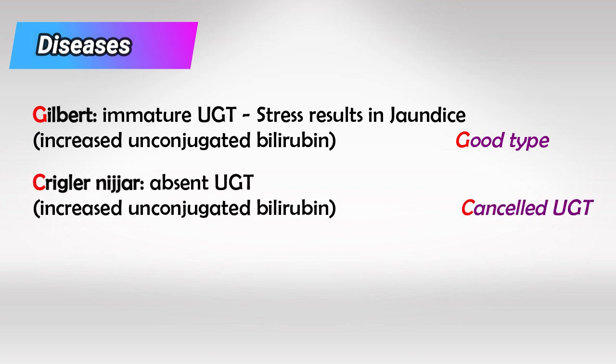Crigler-Najjar syndrome is caused by an absent UGT enzyme. This patient will be unable to conjugate bilirubin whatsoever, and so we will have increased levels of unconjugated bilirubin.